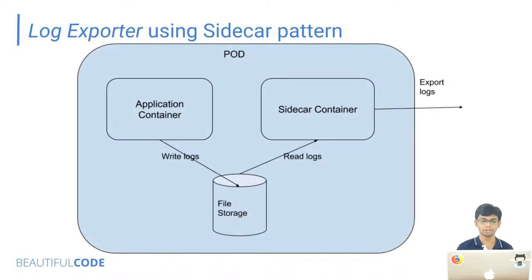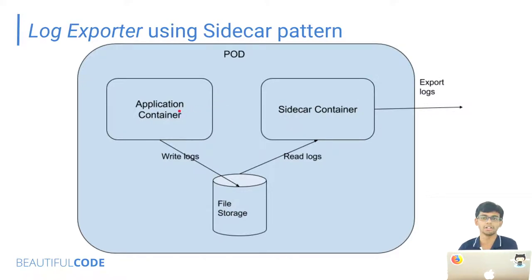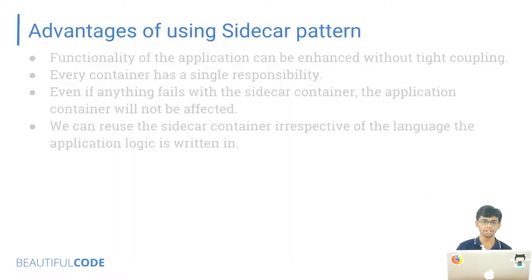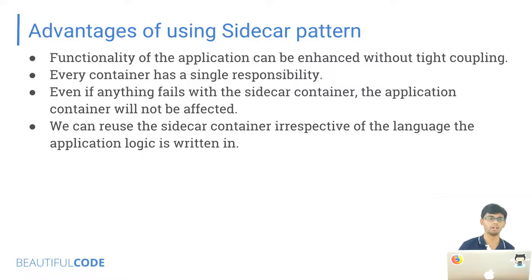How can we solve our problem using this pattern? We can have our application container write all the logs to file storage, and have our sidecar container read those logs and export them to the log parser container. The advantage of this approach is that the logic of uploading logs to the log parser is not core to your application logic — it's in a separate container, can be maintained by a different team, and your application container doesn't need to bother about what happens to the logs.